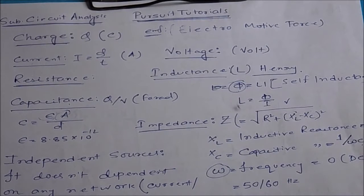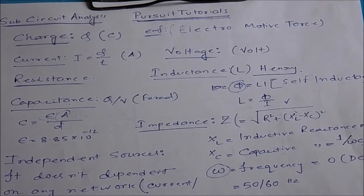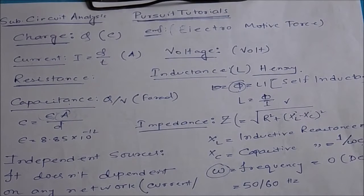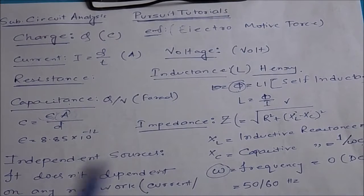Now we discuss different sources. There are dependent sources and independent sources. Independent sources do not depend upon any network — be it current or voltage. Dependent sources are those that depend on a particular network, be it a current network or a voltage network.